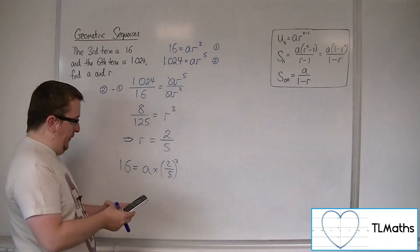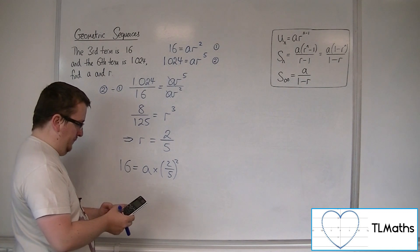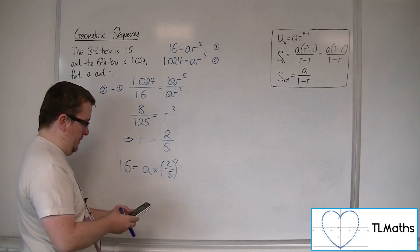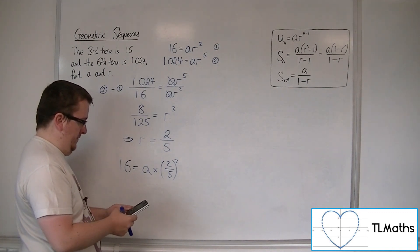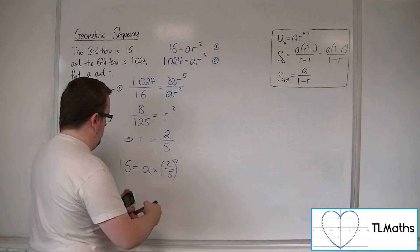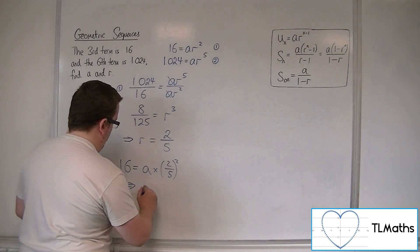Divide both sides by the 2 fifths squared. So 4 over 25 gets me 100. So a is 100.